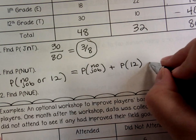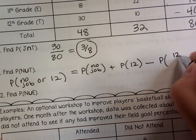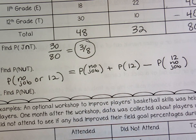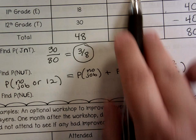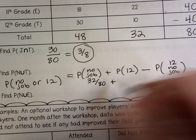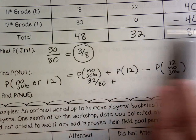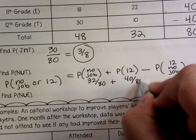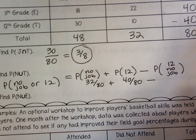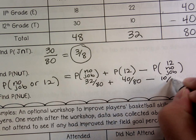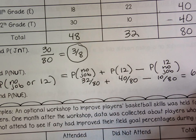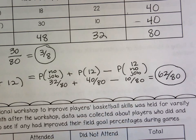Let's also do it with the equation. Any time we add with 'or,' we have to subtract the people who are counted in both categories — 12th graders with no job. Probability of no job: 32 out of 80. Plus probability of being a 12th grader: 40 out of 80. Minus the no-job 12th graders we just counted twice — 10 out of 80. 32 plus 40 minus 10 gives us 62, just like counting the chart boxes directly.